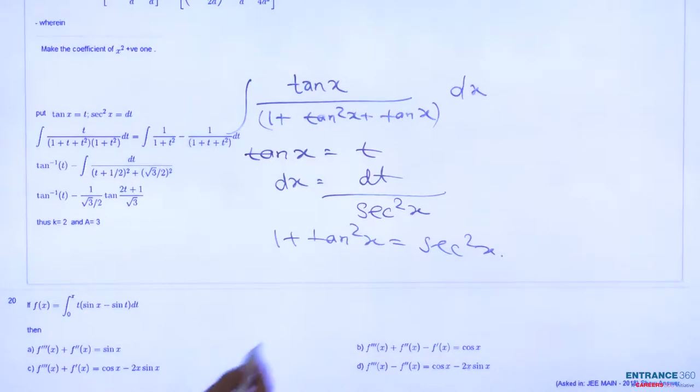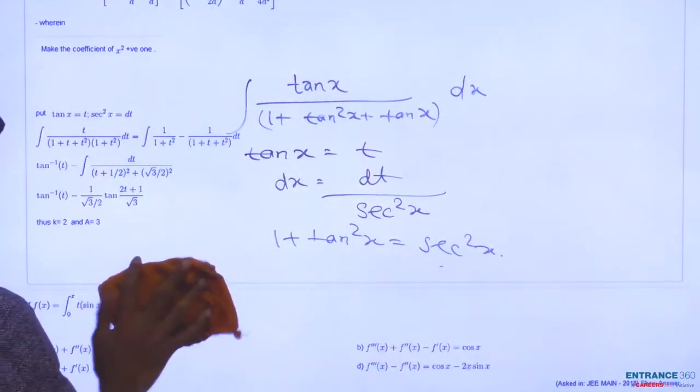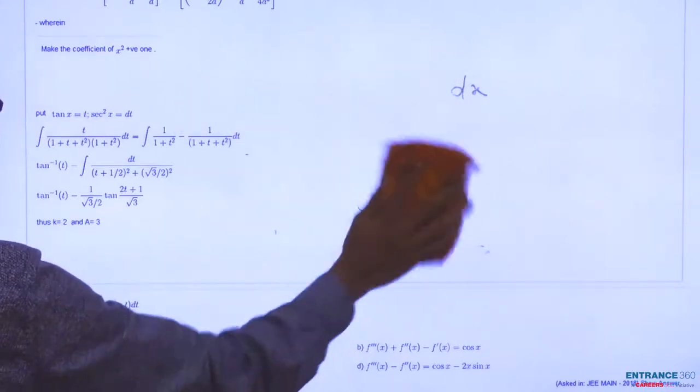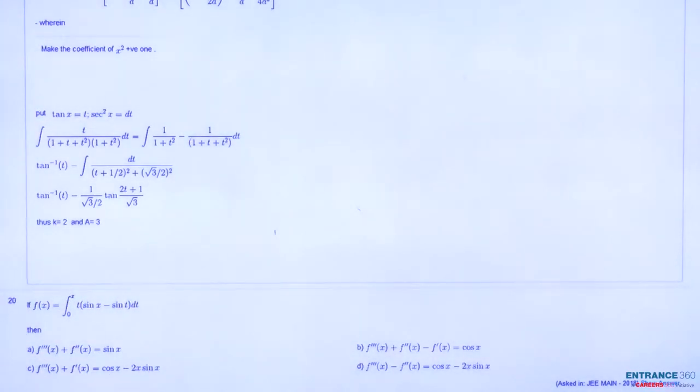Just replace all these values with t and you will get the integration of t divided by (1 plus t plus t squared) times (1 plus t squared) dt.